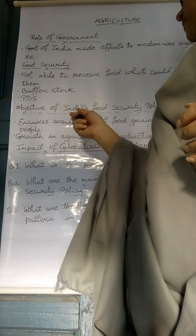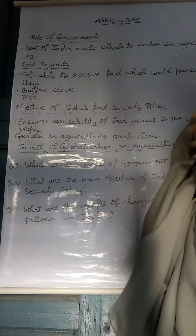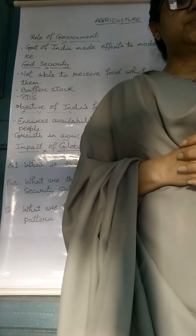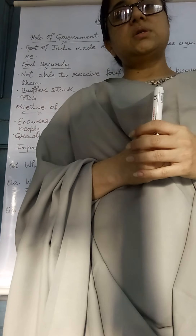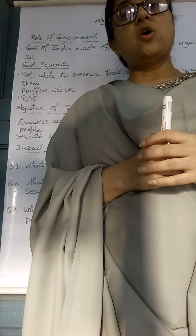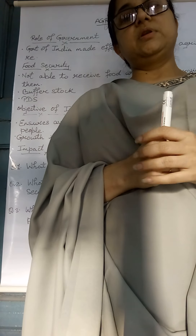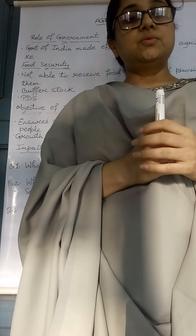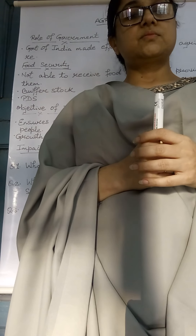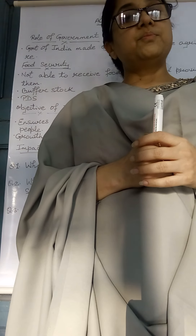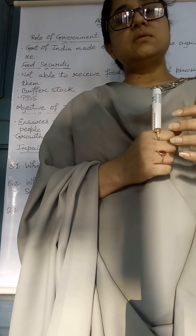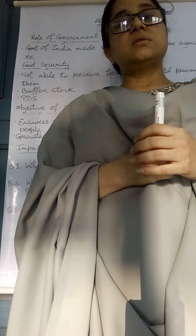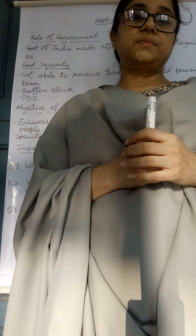Now, the objectives of India's food security policy. The main objectives are: it ensures availability of food grains to the common people, enables the poor to have access to food, promotes growth in agricultural production, and fixes the support price for wheat and rice to maintain their needs.